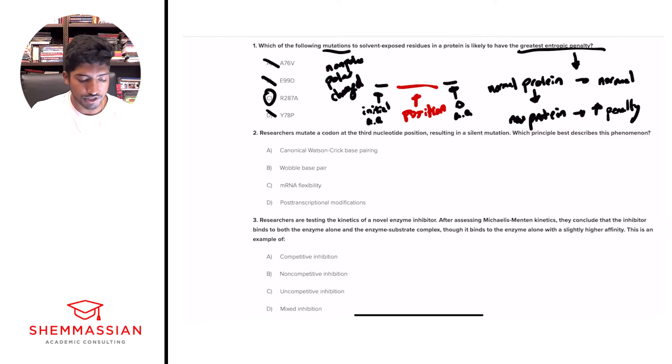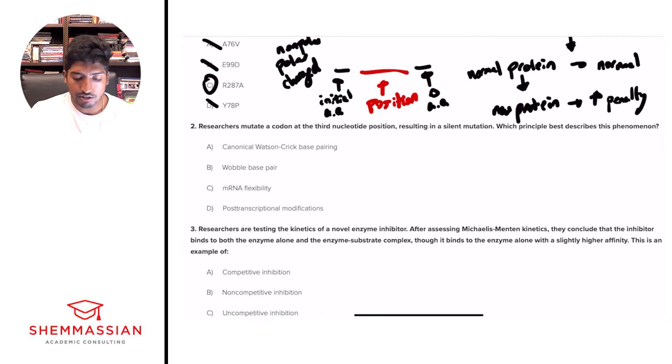Let's go on to question number two. Researchers mutate a codon at the third nucleotide position, resulting in a silent mutation. Which principle best describes this phenomenon? Is it A, canonical Watson-Crick base pairing, B, wobble base pair, C, mRNA flexibility, or D, post-transcriptional modifications? All right. So what are we asking ourselves right now is, what mutation at the third nucleotide position results in a silent mutation, right? Something's happening. So what is a silent mutation?